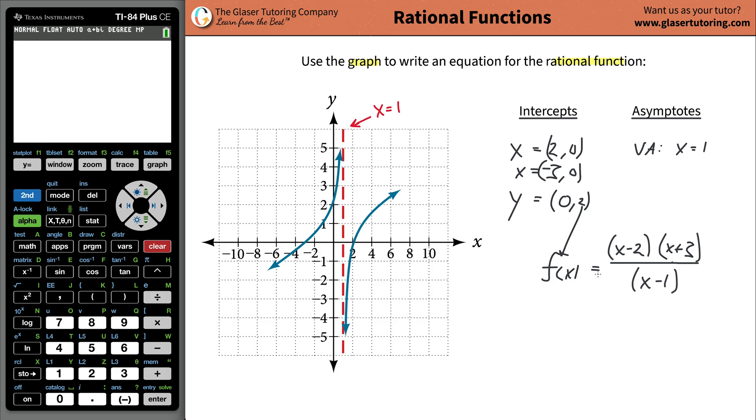So what you can do is plug two in for the function's value. And then everywhere you have an X, you're going to plug in a zero. So zero minus two, zero plus three, and then all over zero minus one.